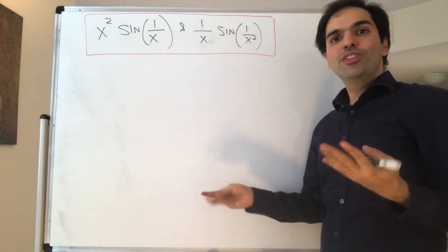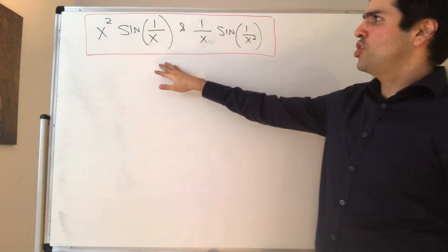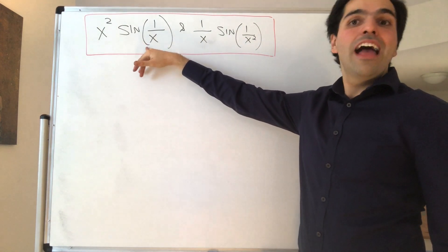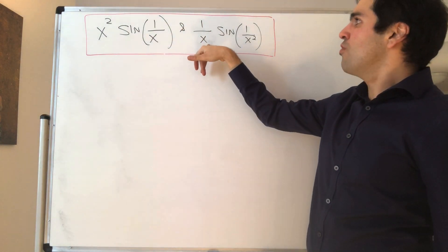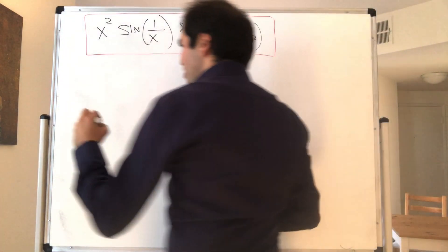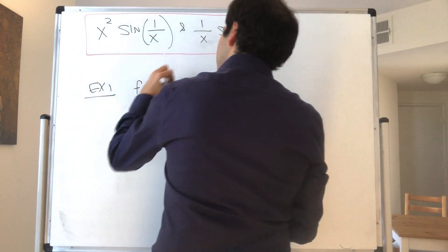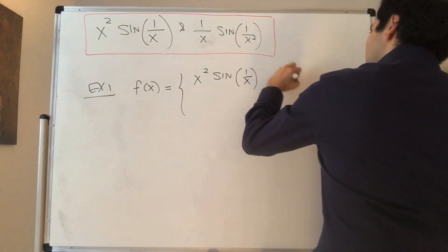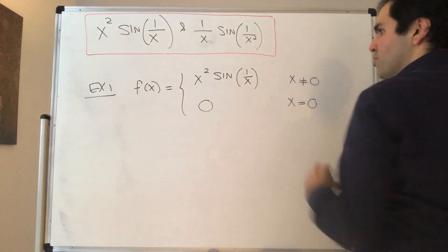Alright, thanks for watching. Today, as practice with the definition of continuity, I will show that even though those two functions are very similar, the first one, x squared sine of 1 over x, is continuous at 0, whereas 1 over x sine of 1 over x squared is discontinuous at 0. So let's do the first one. Define f of x to be x squared sine of 1 over x if x is not equal to 0, and 0 if x equals 0.